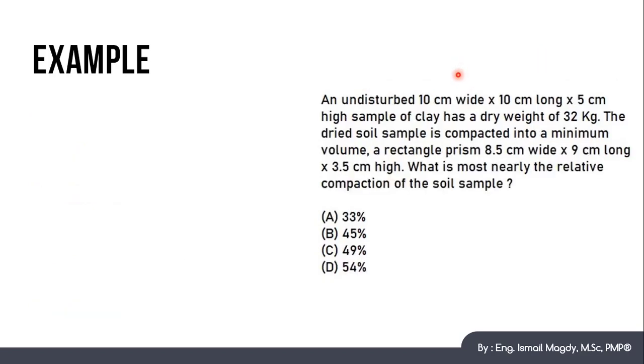Let's check this example. We have a soil sample of 10 cm wide by 10 cm long and 5 cm height. It is clay, and it has dry weight of 32 kg. After that, the dried soil was compacted to its minimum volume. The minimum volume became 8.5 cm wide, 9 cm long, and 3.5 cm height. Now we want to know the relative compaction of this soil sample.